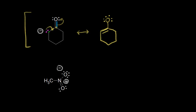Let's follow the electrons. The electrons in magenta moved in to form our new pi bond, and the electrons in the pi bond in blue moved off onto the oxygen — giving the top oxygen a negative one formal charge. So we have our two resonance structures for the enolate anion.